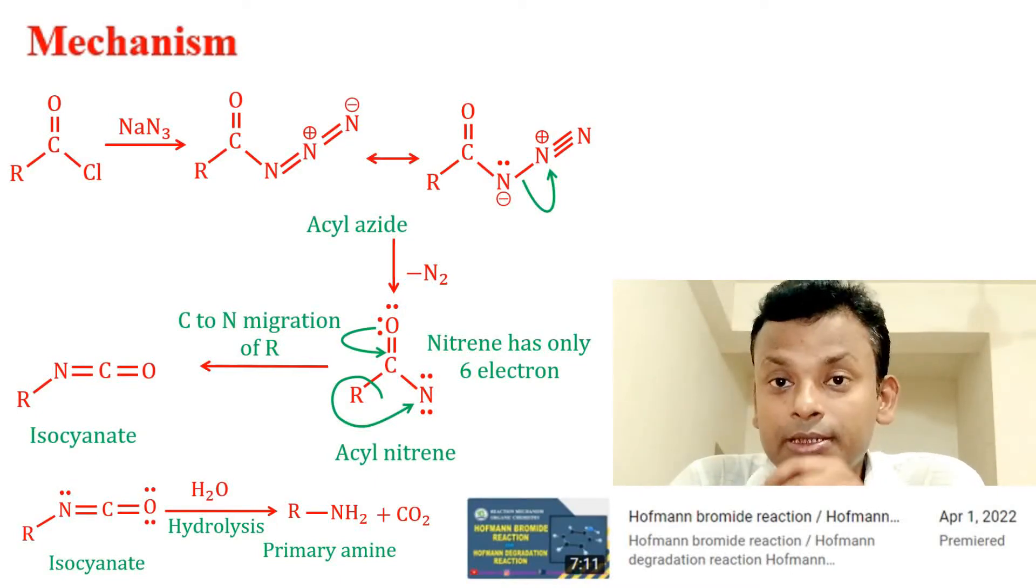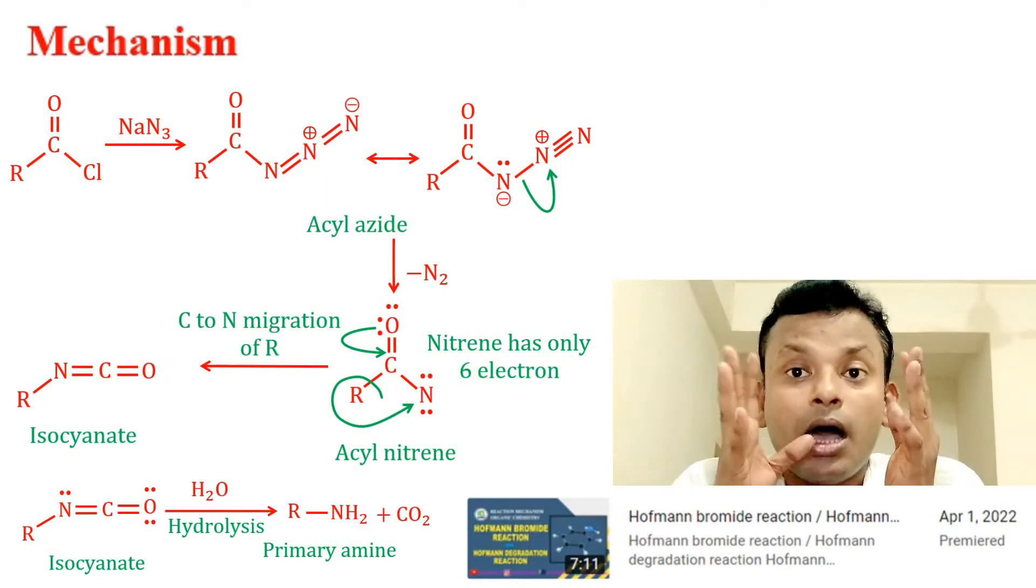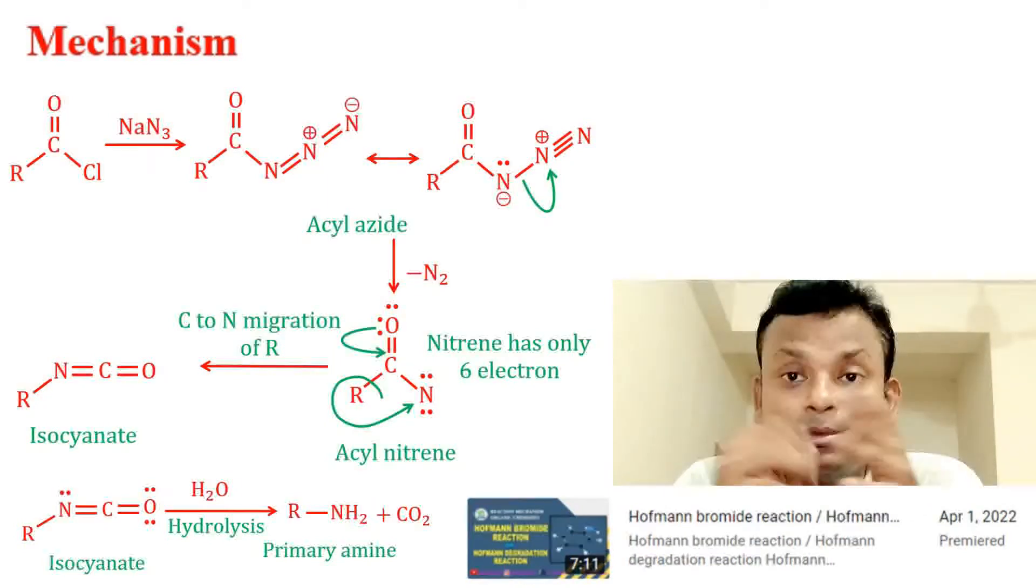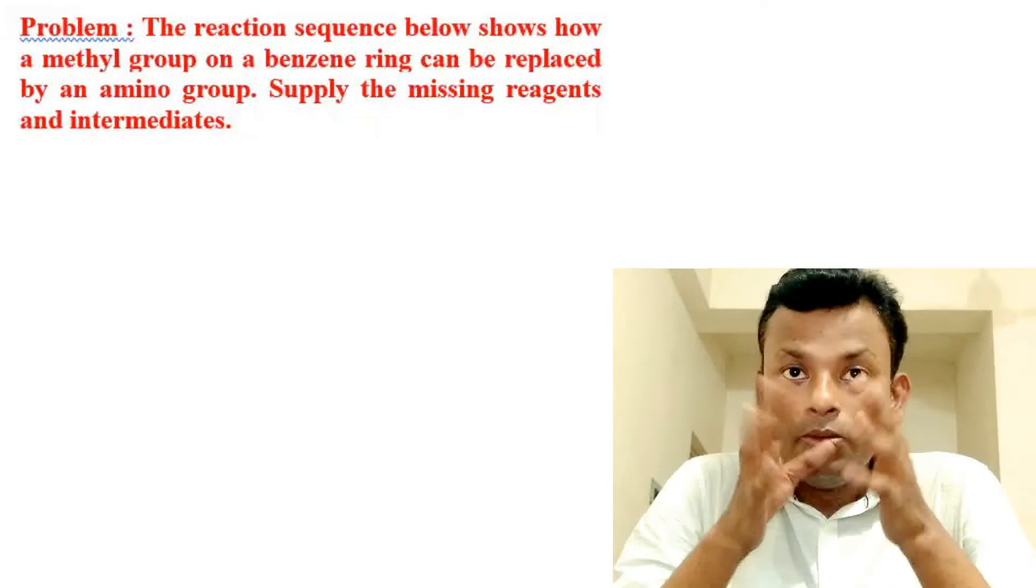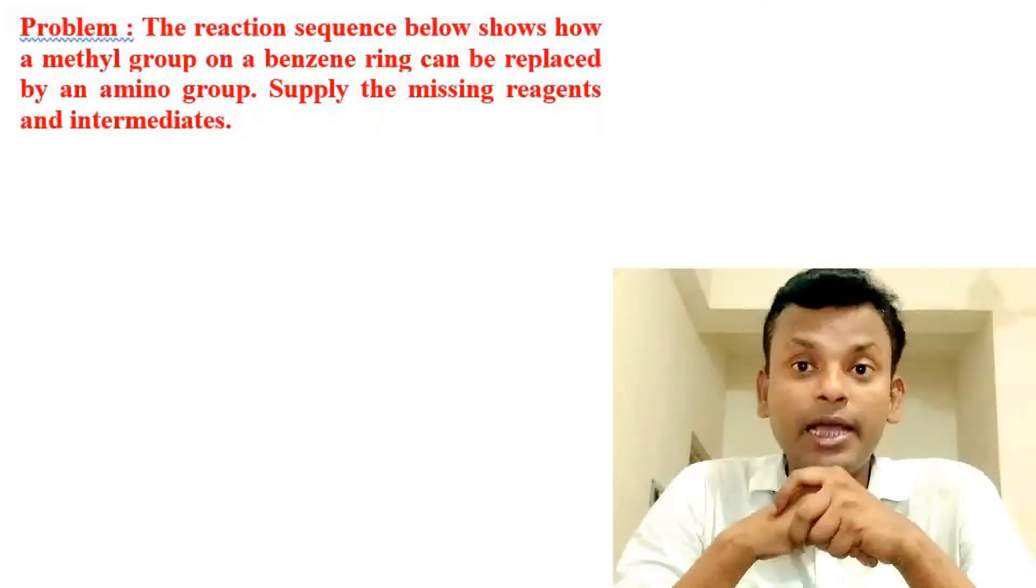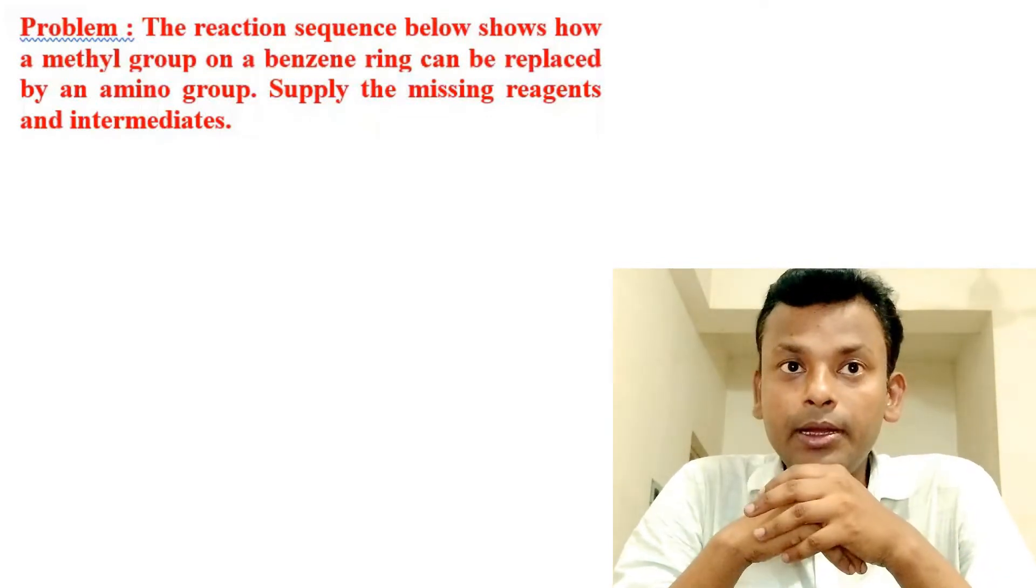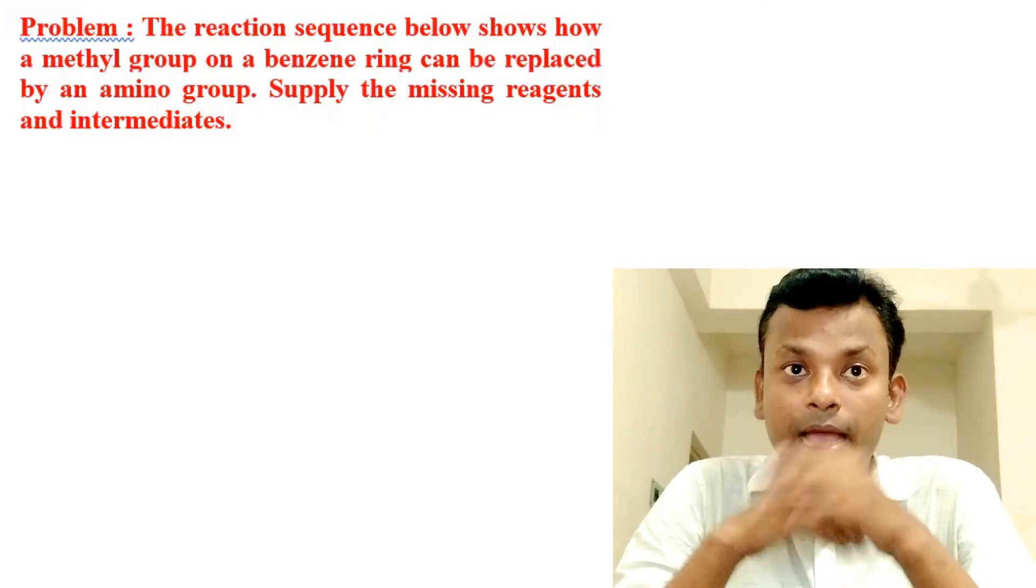You can watch this for clearing of hydrolysis of isocyanate that gives primary amine. Question: The reaction sequence below shows how a methyl group on a benzene ring can be replaced by an amino group.